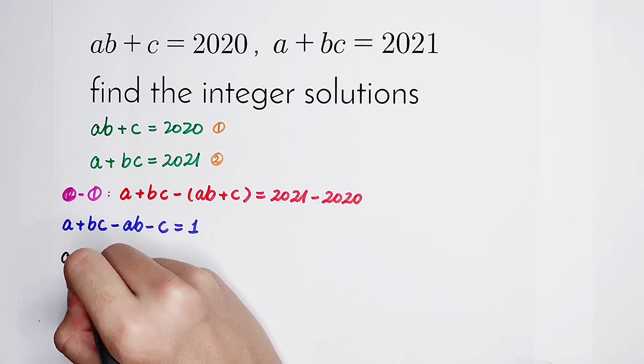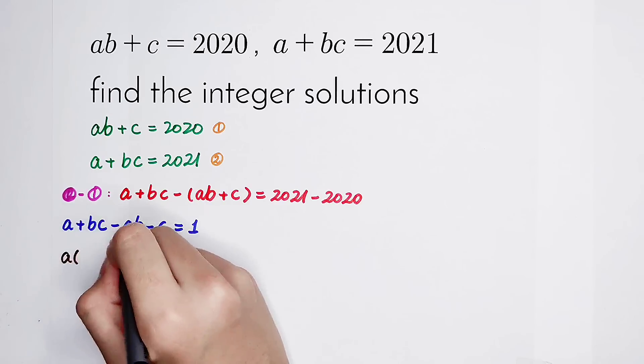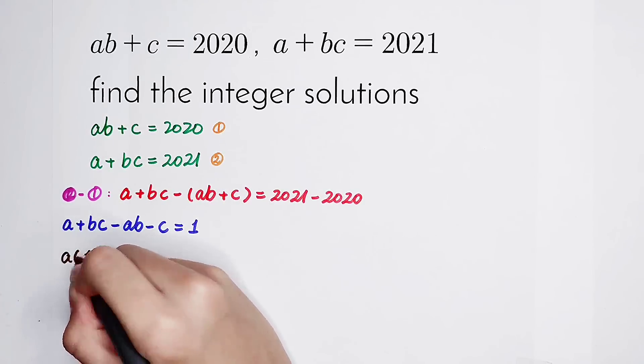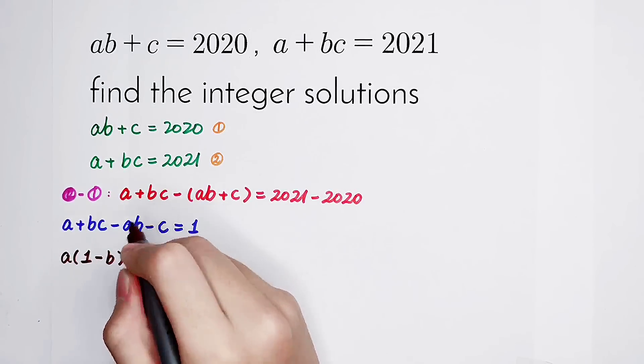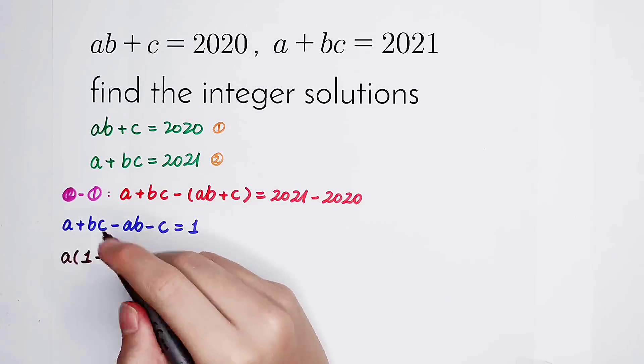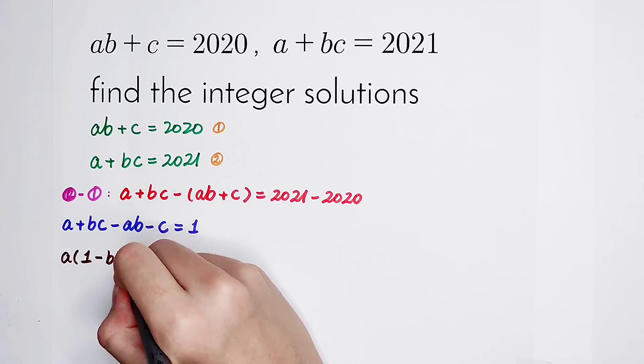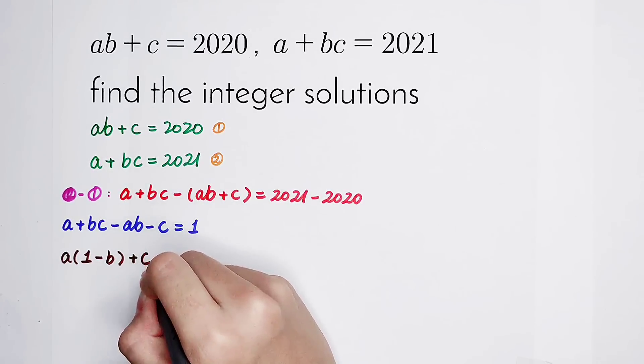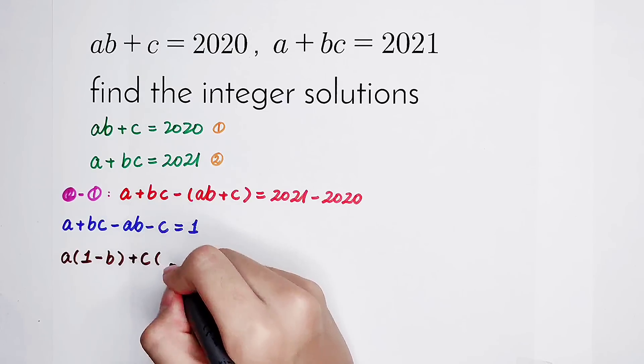And these two terms, BC minus C, I can take out what? A positive C out. And what's in the bracket? It is B minus 1.